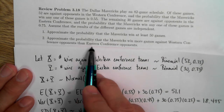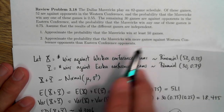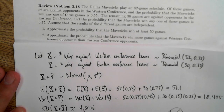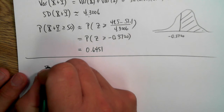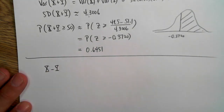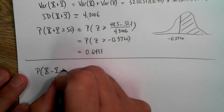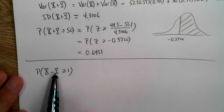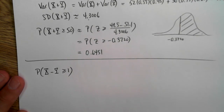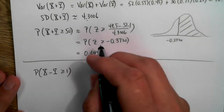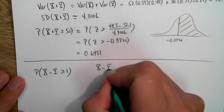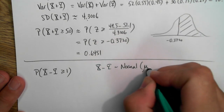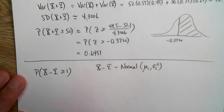Part 2: approximate the probability that the Mavericks win more games against Western Conference opponents than Eastern Conference opponents. This concerns the probability involving X minus Y. I want to find the probability that X minus Y is greater than or equal to 1 — that the number of wins against the Western Conference is at least one more than the number of wins against the Eastern Conference. X minus Y will be normally distributed with a different mean and variance from before.